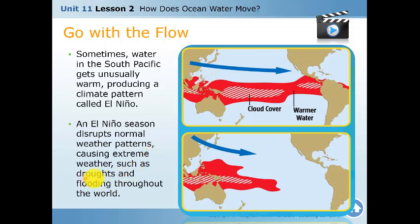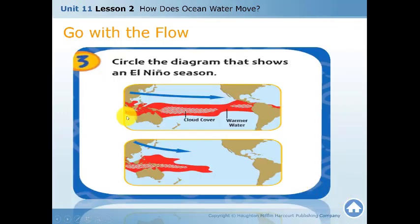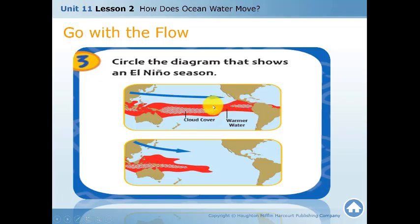An El Niño system disrupts normal weather patterns, causing extreme weather such as droughts and flooding throughout different regions of the world. This phenomenon happens when the water in the Pacific Ocean warms and this warm water moves into the currents — that is called El Niño.